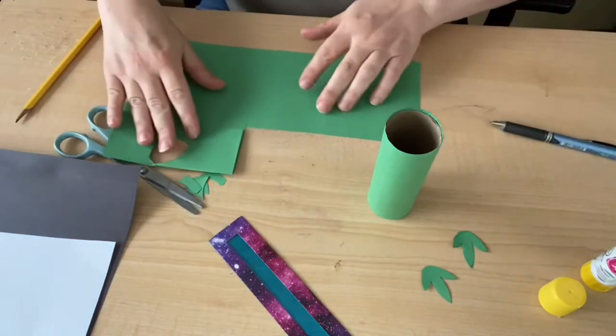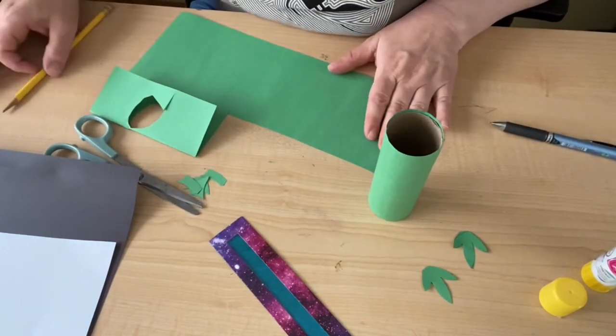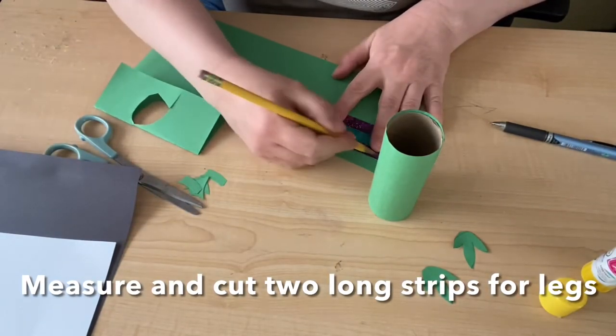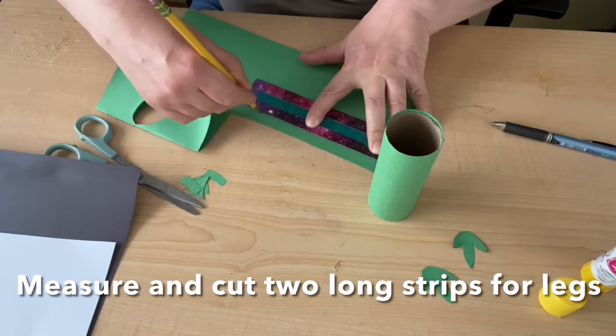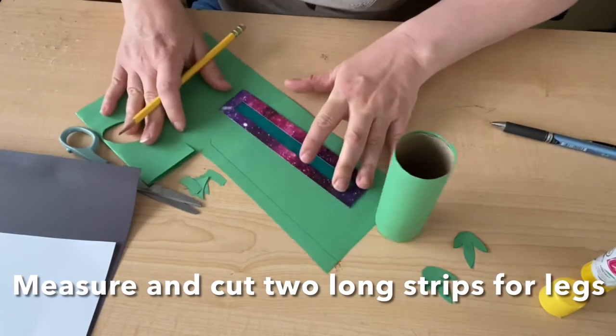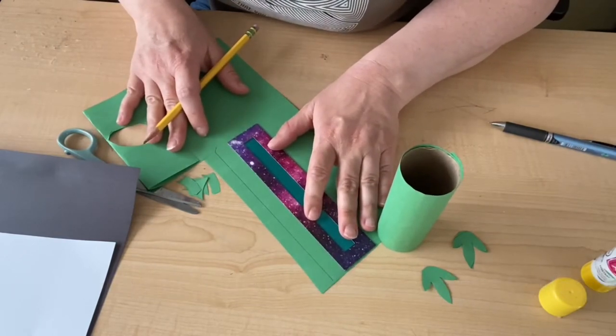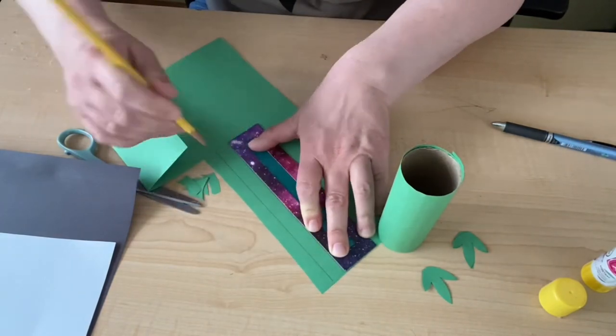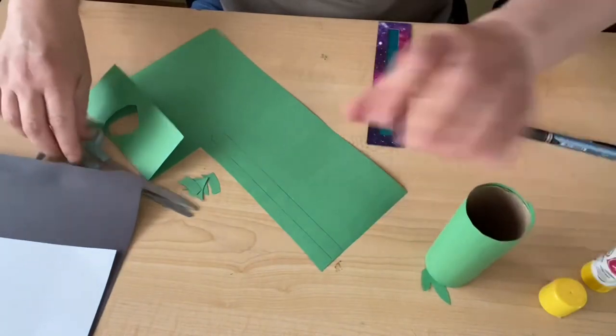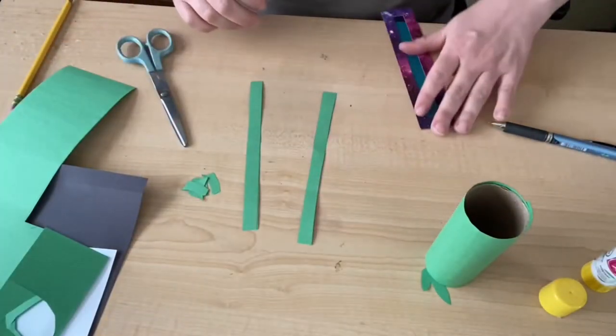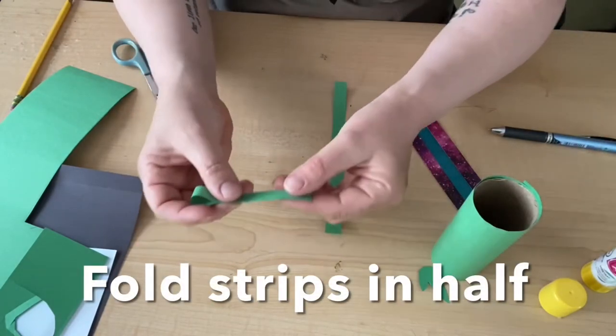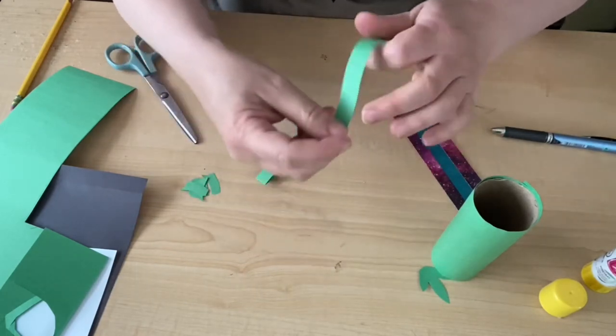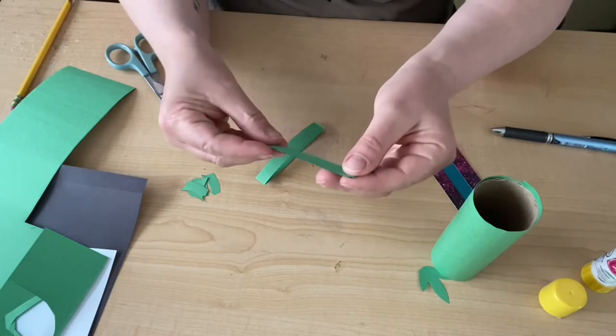Now I'm going to make my frog legs. My frog legs are just going to be long strips of green paper, two of them. I'm going to use my straight edge again to draw two strips and cut them out. Then we're going to fold them in half and make a crease. This is going to be our frog legs.